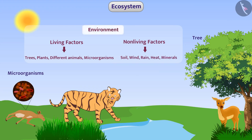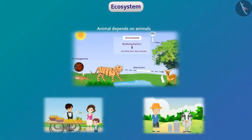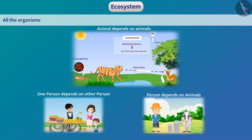No organism can live alone in its environment. To survive, each organism is required to interact with other organisms and abiotic factors around it. For example, various organisms in the forest depend on each other for food and abiotic factors. Every person in the village depends on other people, different animals, and various physical factors for some reason or the other. All the organisms in an area, the abiotic factors in the environment, and their interactions are called an ecosystem.